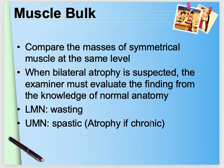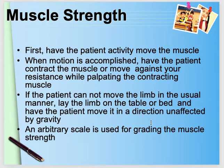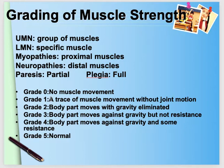We check for any weakness by checking muscle strength. The MRC scale grades muscle strength as follows: Grade 5 is normal power; Grade 4 is when the body part moves against gravity and some resistance.